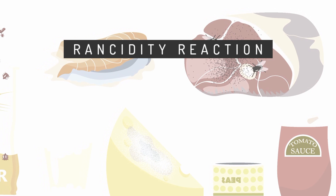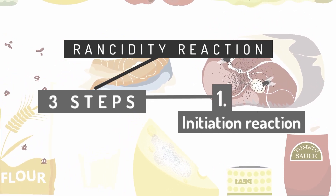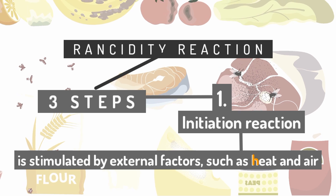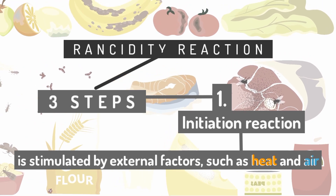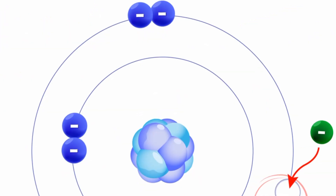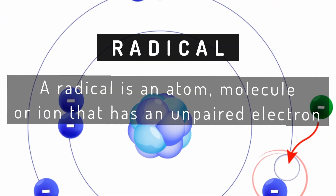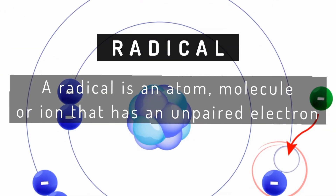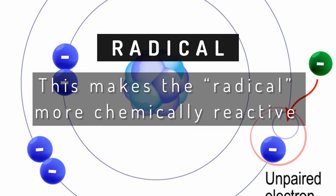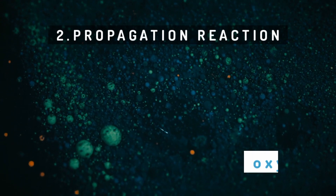Rancidity reactions occur in three steps. The initiation reaction is stimulated by external factors, such as heat and air, which leads to the formation of radicals on the food substance. By definition, a radical is an atom, molecule, or ion that has an unpaired electron. This makes the radical more chemically reactive.